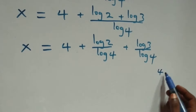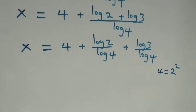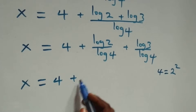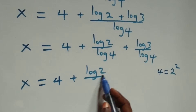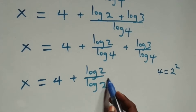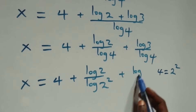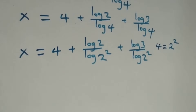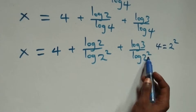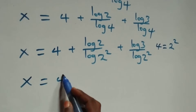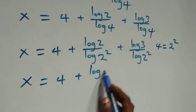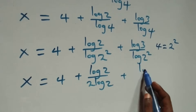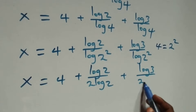Now four is the same as two times two, which is two squared. So all we have becomes x equals four plus log two over log two squared plus log three over log two squared. Applying the power rule, the two comes down from the exponent: x equals four plus log two over two log two plus log three over two log two.